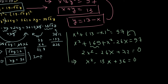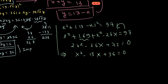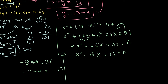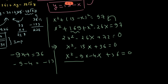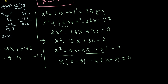Factoring out 2 gives x² − 13x + 36 = 0. This quadratic is nicely factorable: 36 = 9 × 4, and −9 + (−4) = −13, with (−9)(−4) = 36. So we write x² − 9x − 4x + 36 = 0, factor as x(x − 9) − 4(x − 9) = 0, giving (x − 9)(x − 4) = 0.